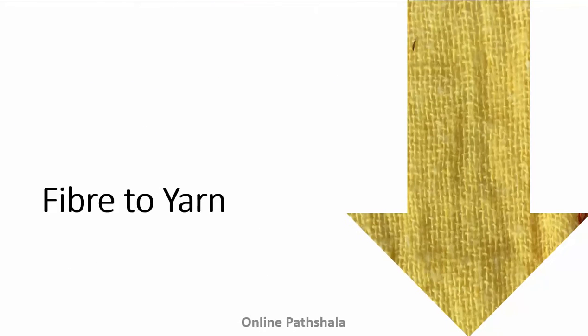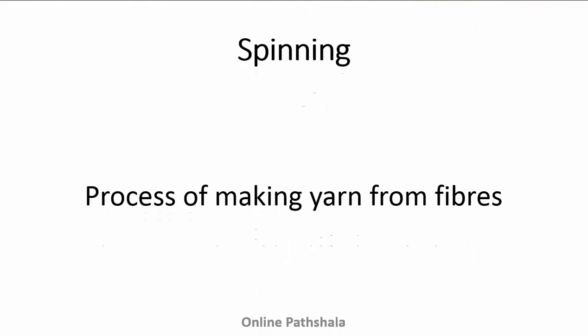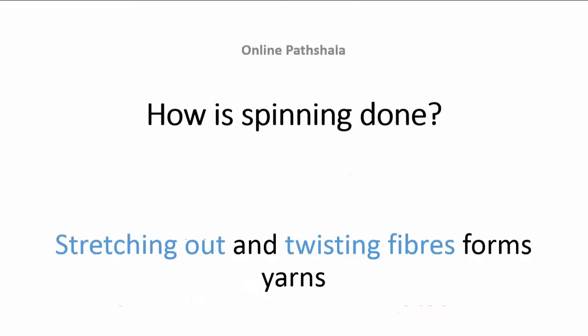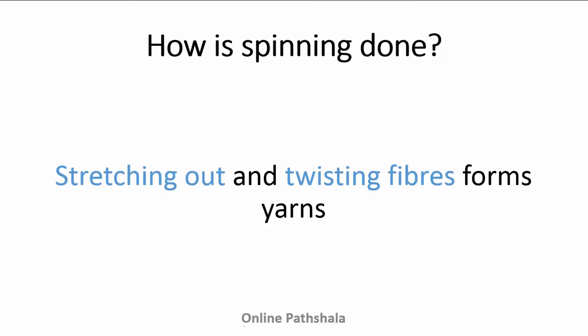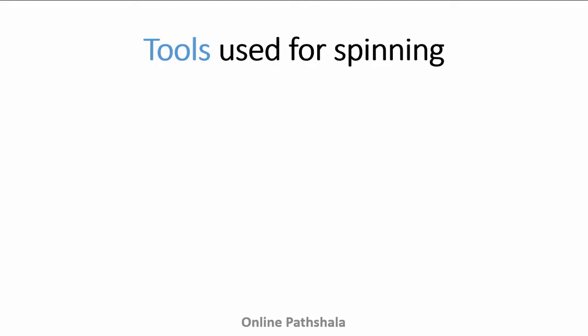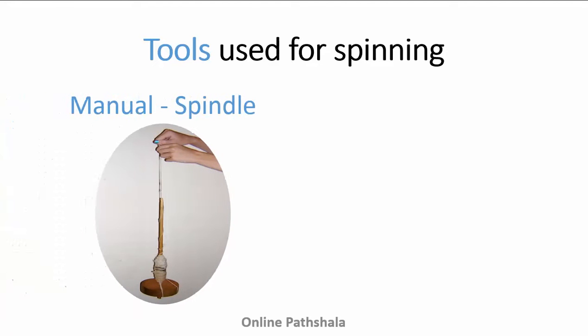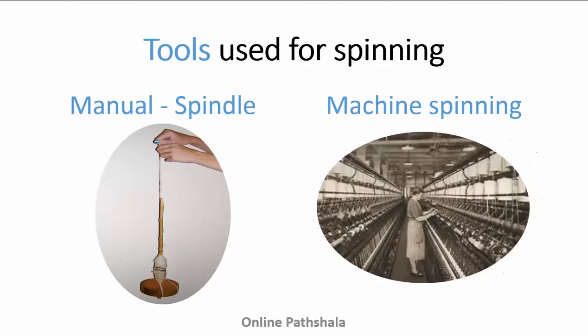So how do we go from fibre to yarns? The fibres obtained from plants are then converted into yarn through a process known as spinning. In this process, fibres from the mass of cotton wool are drawn out and twisted, bringing the fibres together to form a yarn. Spinning on a small scale can be done by hand using a simple device known as a spindle. Spinning on a large scale is done using spinning machines.